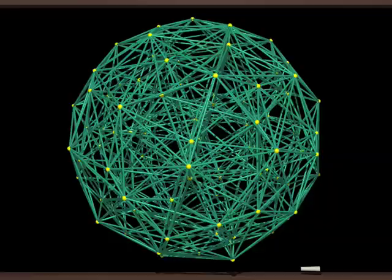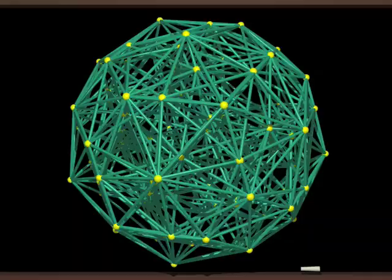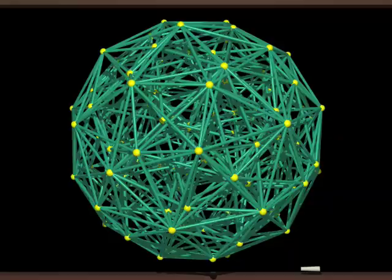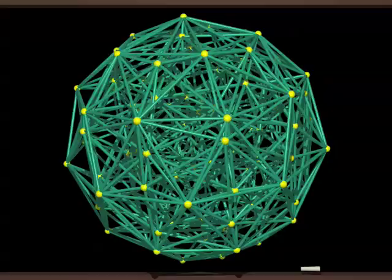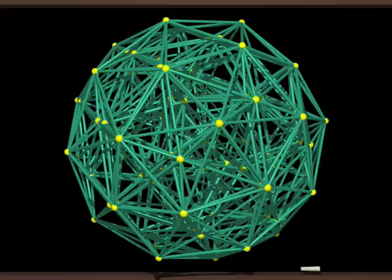The champion is the 600-cell, like a gigantic macromolecule with its 720 edges and 120 vertices, and 12 edges starting from each vertex.